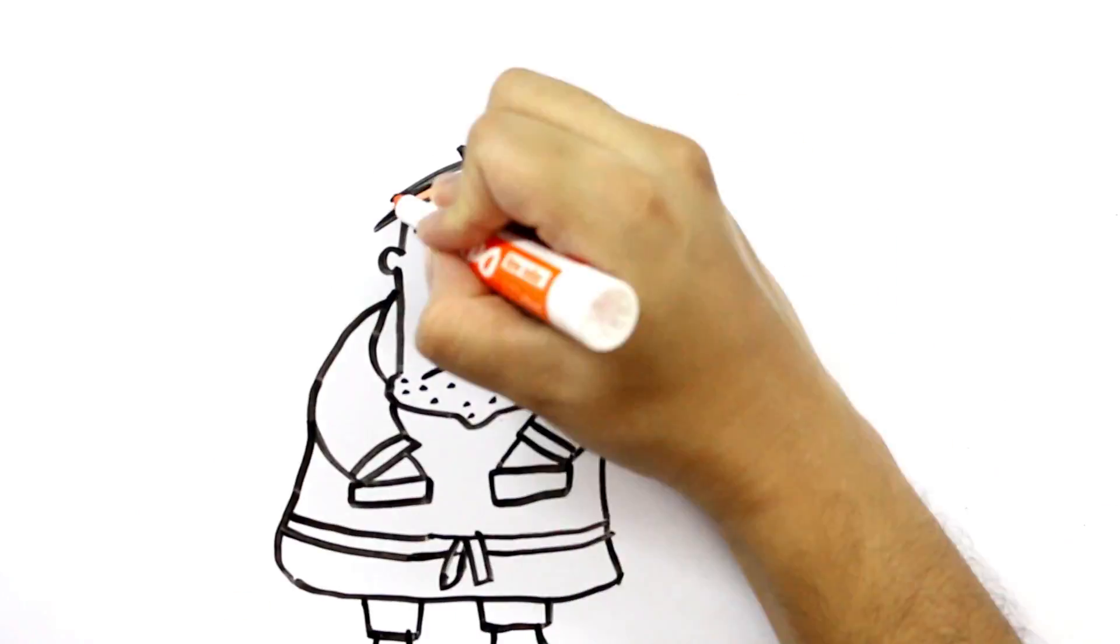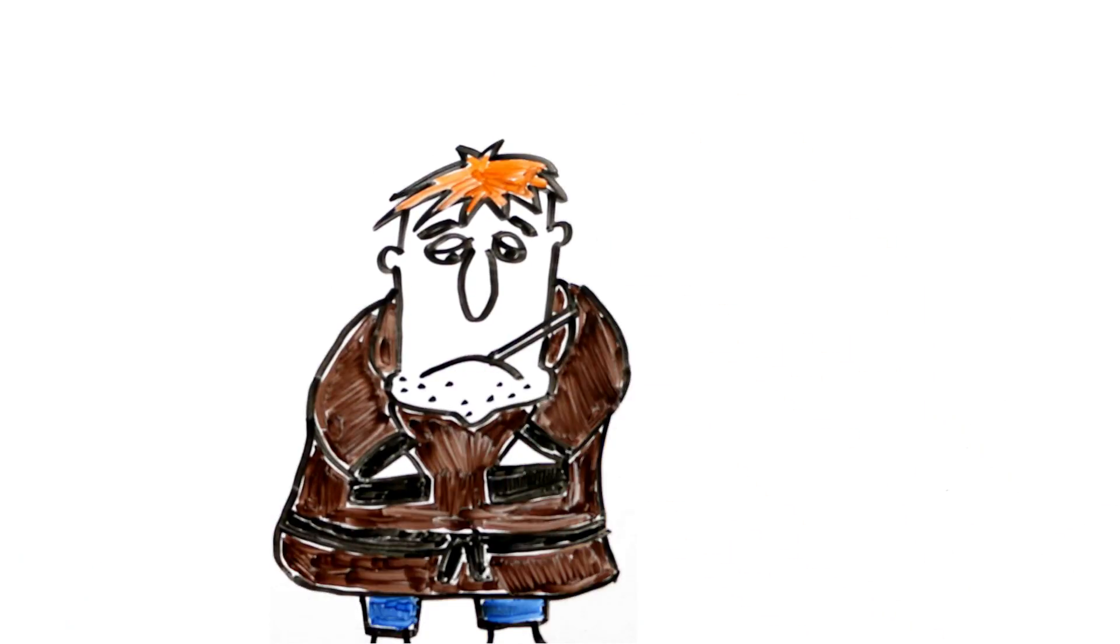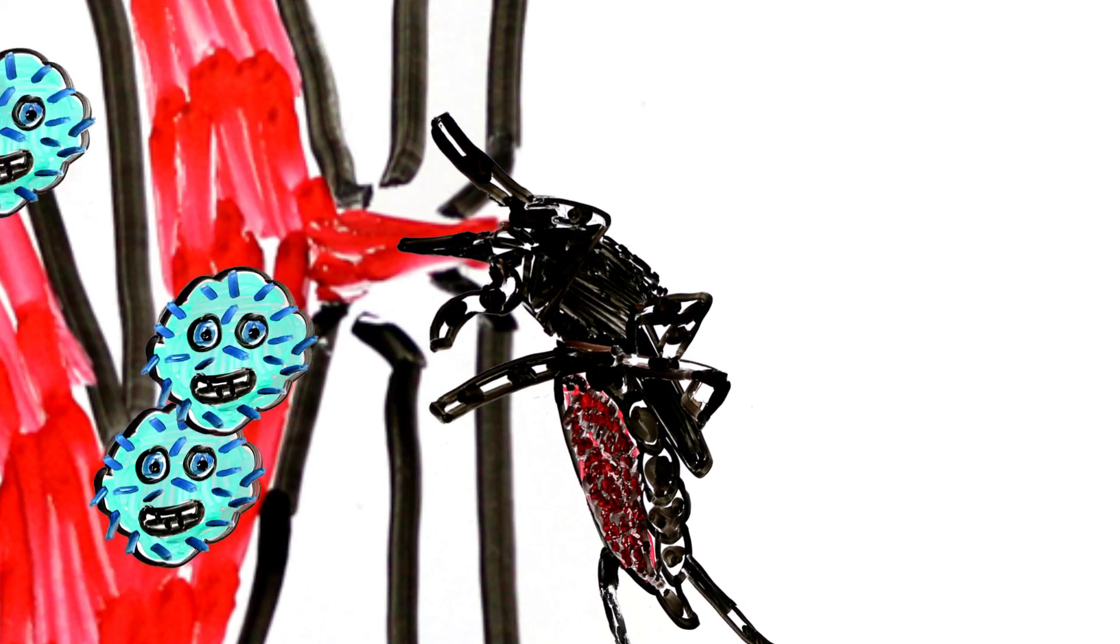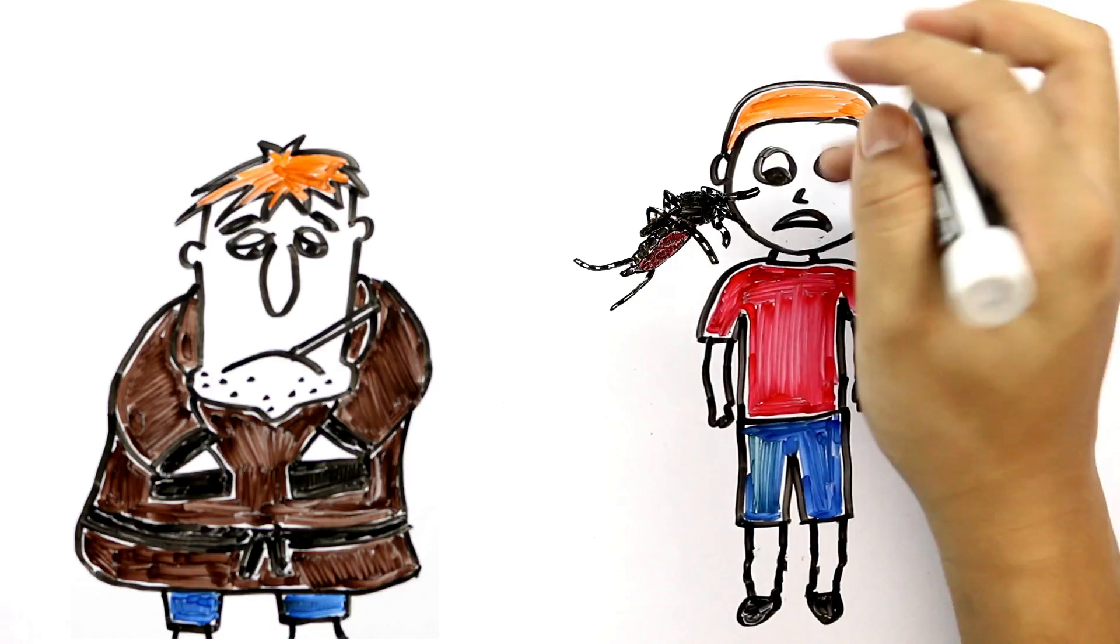The Zika virus is spread mainly through mosquitoes. An Aedes mosquito bites an infected person, draws blood and contracts the virus. When it then goes and bites another person, the virus spreads.